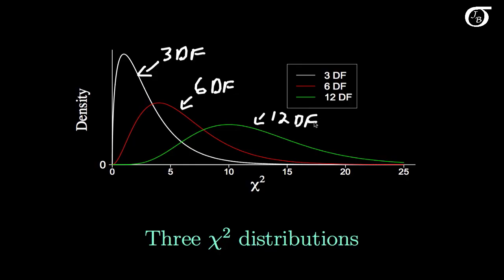Note a few things. As the degrees of freedom increase, the mean is increasing, as we saw on the PDF page. The variance is increasing as well. One thing we can note is that the chi-square distribution has some right skewness, but that right skewness starts to decrease as the degrees of freedom increase. When we have 12 degrees of freedom, we don't have as much skewness as we did with 3 degrees of freedom. That right skewness going away as degrees of freedom increase is something called the central limit theorem at work.